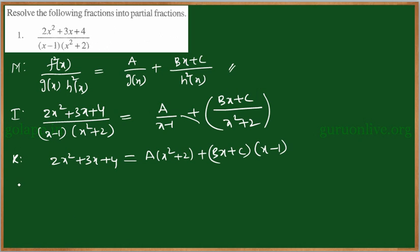To solve for A, B, and C, put x equal to 0. The left-hand side gives 4. On the right-hand side, putting 0 gives 2A. The Bx term becomes 0 but C remains, and (x minus 1) becomes minus 1, giving minus C. So equation 1 is: 4 equals 2A minus C.